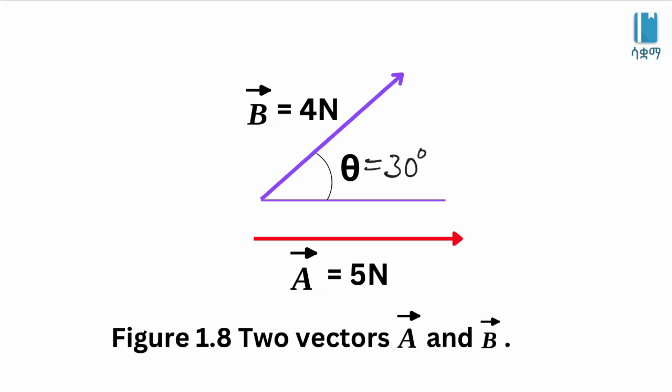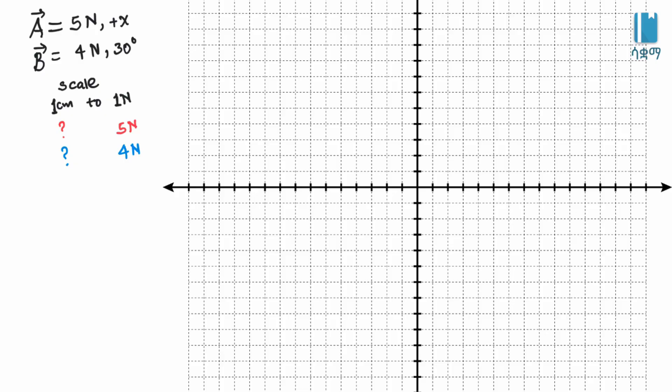We draw vector A along the positive x-direction, which is east. Then along the positive y-direction. We will use the graphical representation of the vectors. First, let us use the analytical method. Vector A is 5 Newtons in the positive x-direction. Vector B is 4 Newtons at 30 degrees from the positive x-axis, or from horizontal.